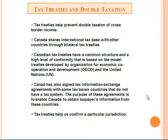Canadian tax treaties have a common structure and a high level of conformity based on the model treaties developed by the Organization for Economic Cooperation and Development (OECD) and the United Nations. Canada has also signed tax information exchange agreements with some tax haven countries that do not have a tax system. The purpose of these agreements is to enable Canada to obtain taxpayers' information from these countries. Tax treaties also help confirm a particular tax jurisdiction.